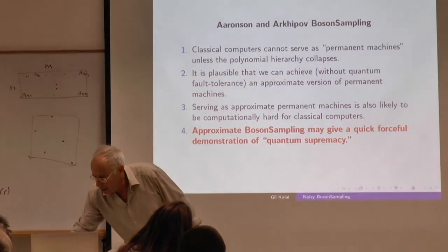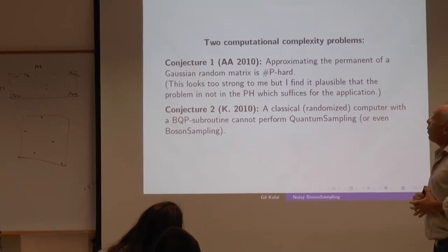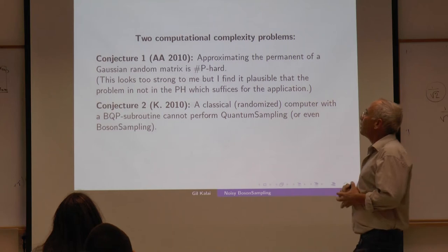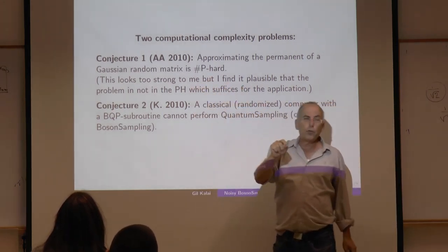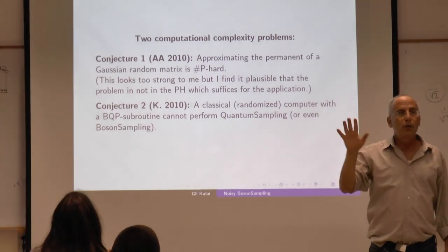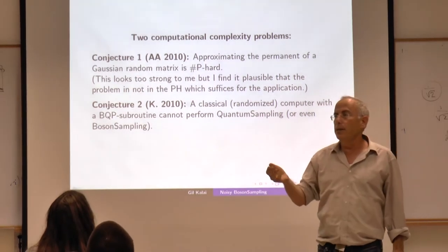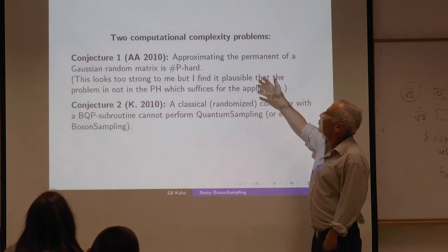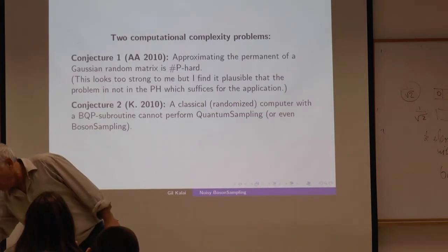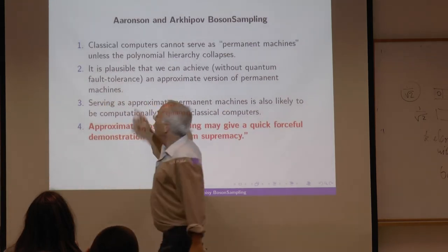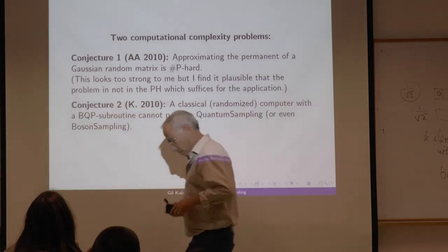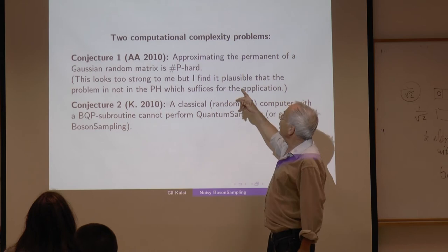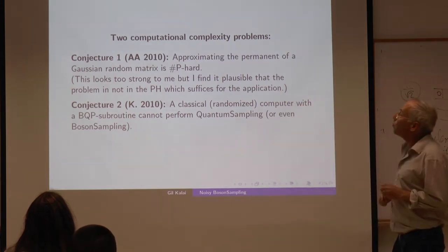Two computational complexity problems: one is approximating the permanent of a Gaussian random matrix. They proposed to consider random Gaussian matrices as input for both theoretical and practical reasons. They needed a conjecture to justify their second point: that even approximating the permanent of a random Gaussian matrix is #P-hard. I think this is too strong a conjecture to be true. What they really need is that approximating the permanent of a random Gaussian matrix is not in the polynomial hierarchy, which is a more reasonable weaker statement.